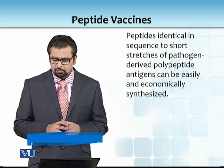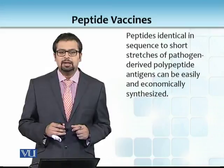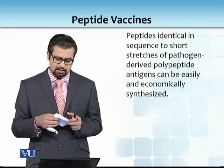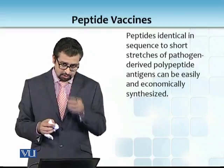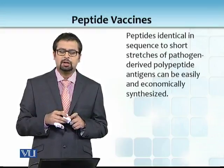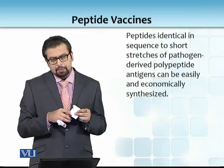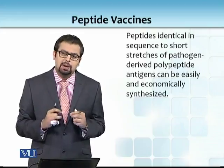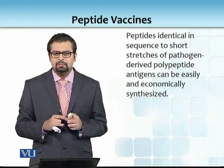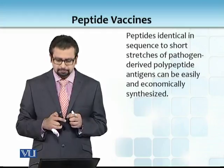Main aapke ek example deta hoon. Aapke paas ek antigen hai, aur ek antigen se kya bind karti hai — antibody bind karti hai. For example, I take this tissue paper jo mere haath mein hain as a big antigen. Antibody ne aana hai aur aa ke is ke saath bind kar lena hai. Lekin agar main is ko map karoon, ke jis tarike se yeh pen is particular tissue paper ke andar gaya hua hai, to there will be some contact points — contact amino acids jo is se interact kar rahe hain.